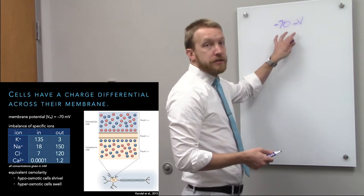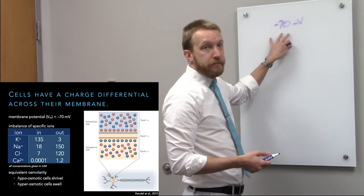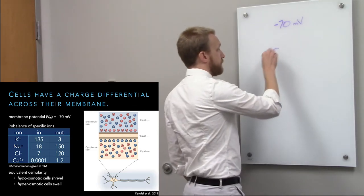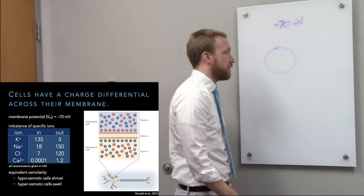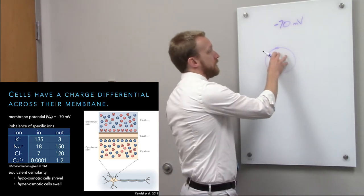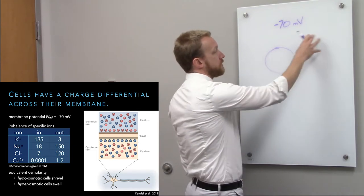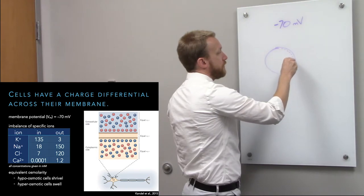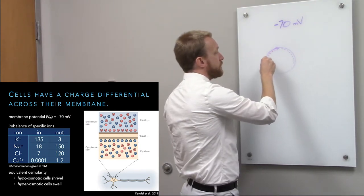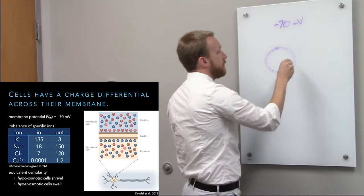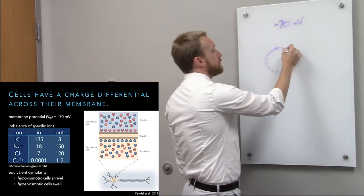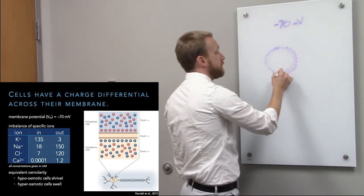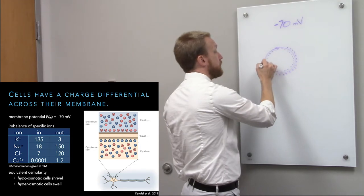At -70 millivolts, we're talking about the charge difference right at the membrane, not a difference in gross charge throughout the whole cell versus outside. We're lining the membrane more with negative charge on the inside, and the outside is lined more with positive charge.